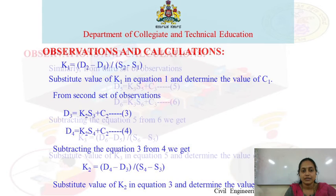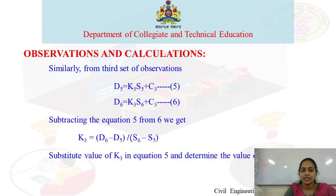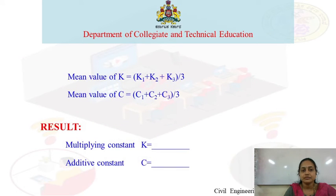After finding K2, substitute it to get C2. Similarly, solve the third set of equations. Substitute all values to get K3, then substitute K3 into equation 5 to get C3. Finally, find the mean values of K and C and record the result.